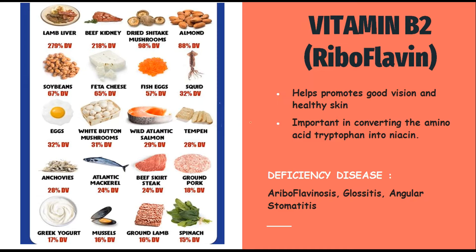Next we have vitamin B2, called riboflavin. It promotes good vision and healthy skin, and is important in converting the amino acid tryptophan into niacin. Deficiency diseases caused due to vitamin B2 are ariboflavinosis, glossitis, and angular stomatitis. Food sources include soya beans, beef kidney, almonds, squid, fish, eggs, feta cheese, Atlantic mackerel, beef, ground pork, yogurt, and spinach.